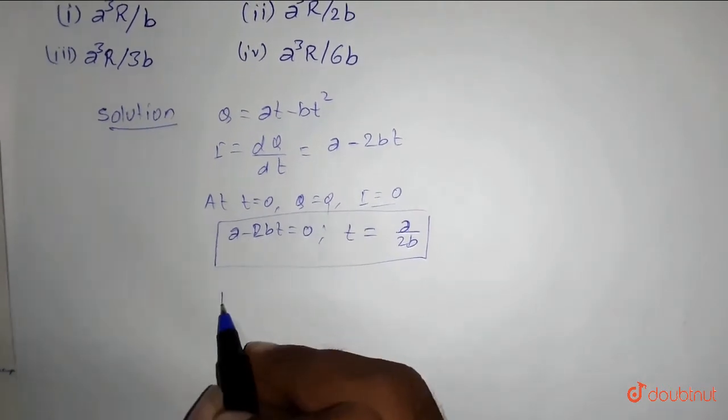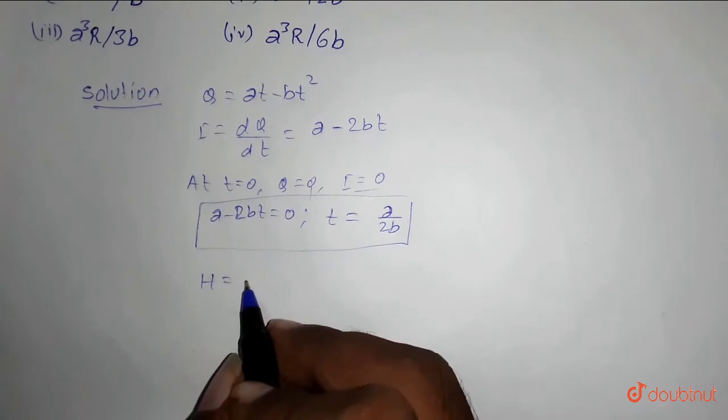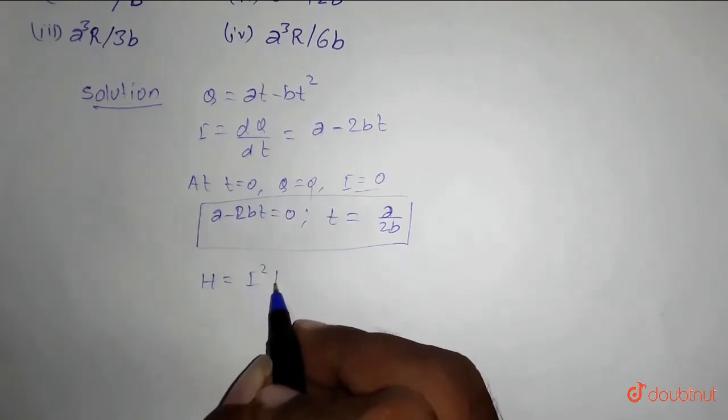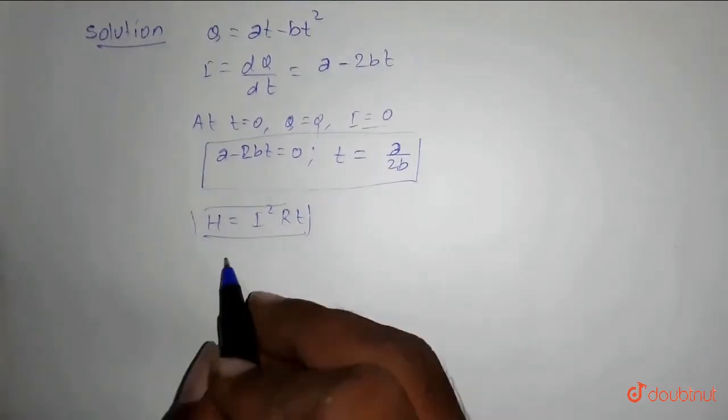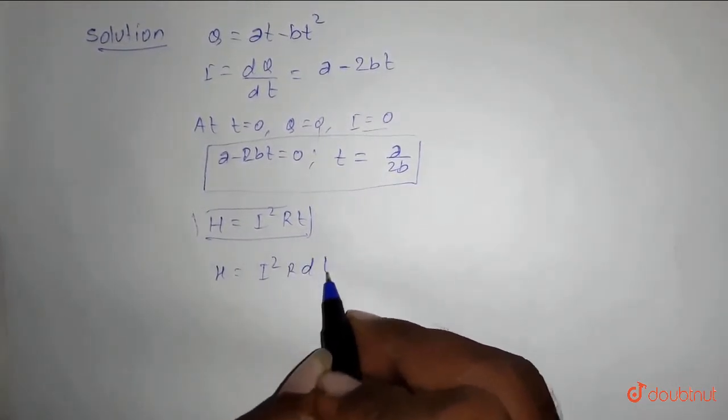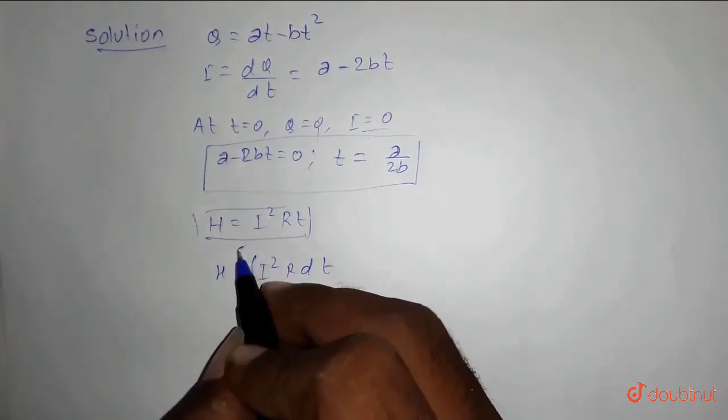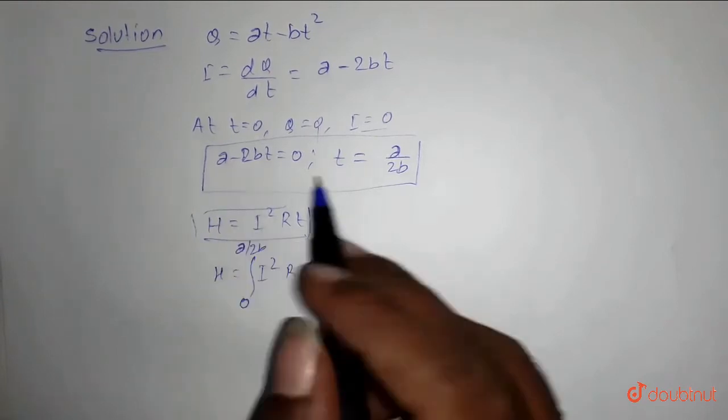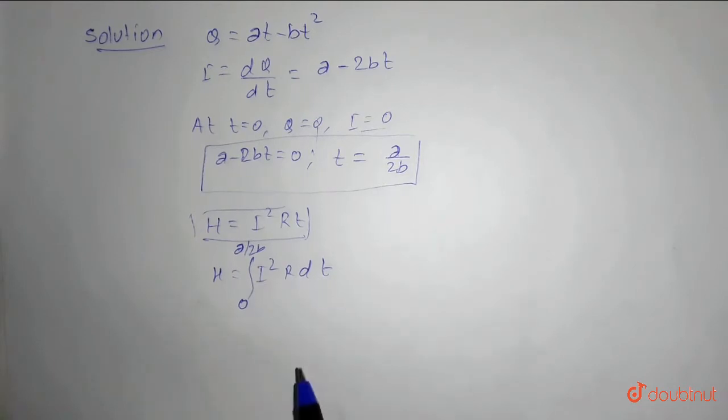And as we know, H equals, that is heat produced will be equal to i square R t. This is the formula for heat. So in this part we can write it as H equals integration of i square R dt, and heat produced will be from 0 to a by 2b. Since current is 0 at a by 2b, it will be produced from time 0 to a by 2b.